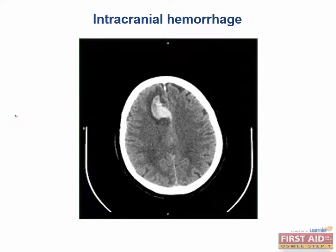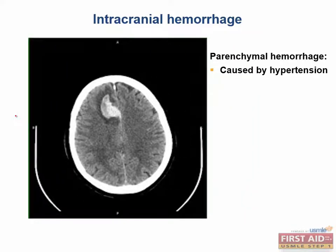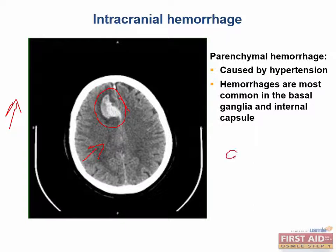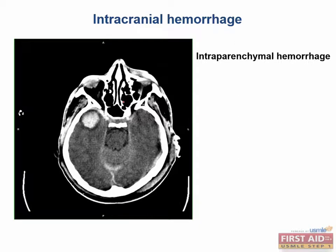A parenchymal hemorrhage is most often caused by hypertension, though amyloid angiopathy and certain toxic metabolic causes are occasionally at fault. Small vessels are affected, such as the lenticulostriate arteries, and these hemorrhages are most common in the basal ganglia and internal capsule. The fact that the lesion is hyperintense when compared to brain matter tells us it is an acute lesion. The CT of an intraparenchymal hemorrhage shows a rounded area with contrast enhancement.